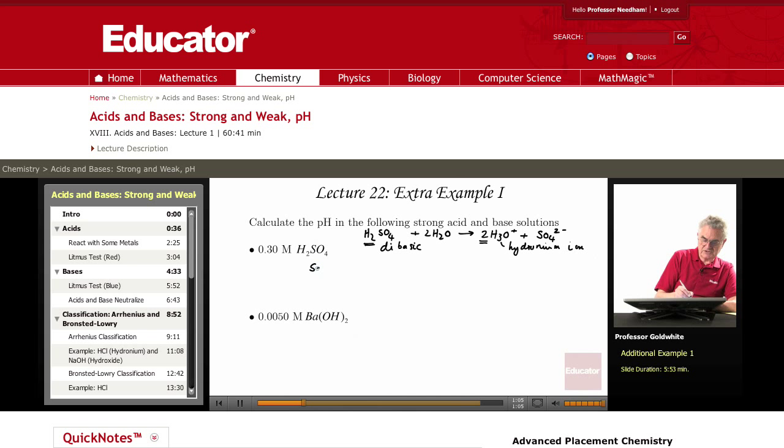So, the concentration of H3O plus in this solution equals two times 0.30 molar equals 0.60 molar. The pH is the negative logarithm to the base 10 of H3O plus equals negative logarithm to the base 10 of 0.60. The negative of negative 0.22 equals 0.22.